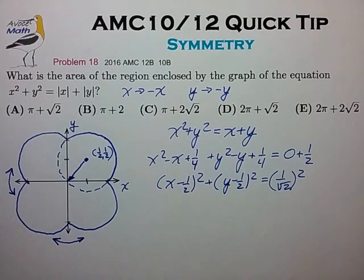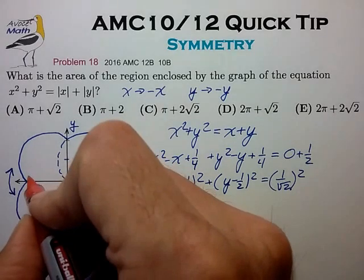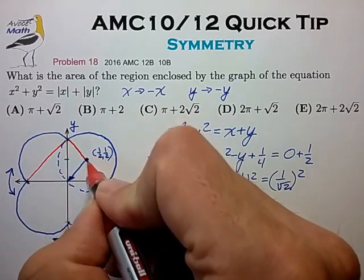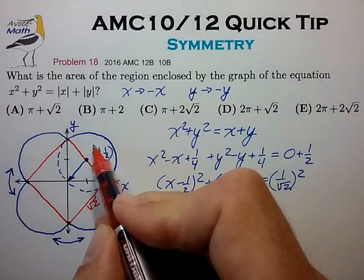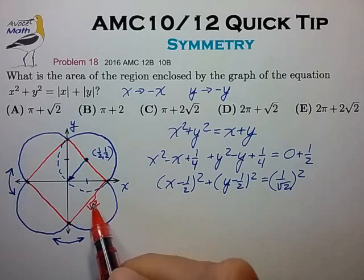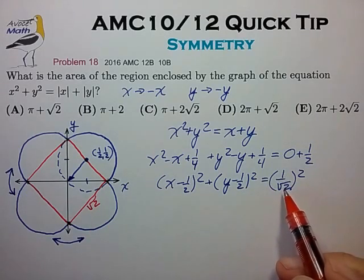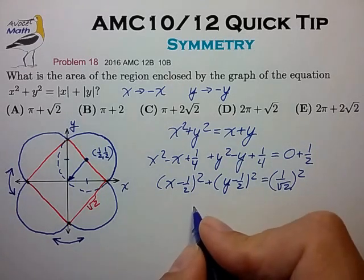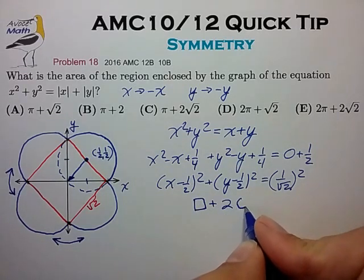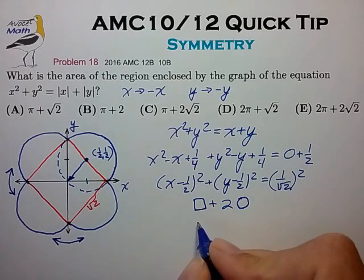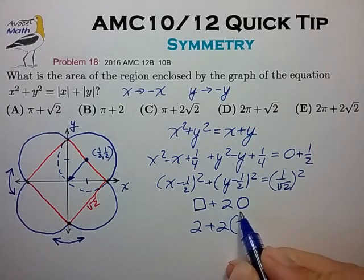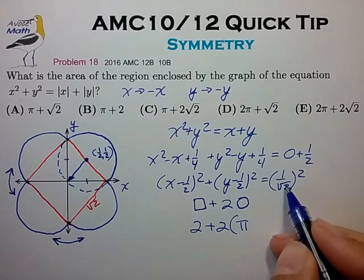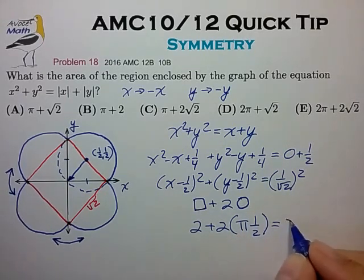And from here, it's pretty easy to complete this problem now, because we see that we can reduce this entire area to something that looks like a diagonal square of side length root two plus two, or I'm sorry, four semicircles of radius one over root two. So it looks like we have a square plus two complete circles. And the square has side root two. So the area of the square is two plus two times pi times the radius square of the circle. And the radius square is one half. And so that's equal to two plus pi.